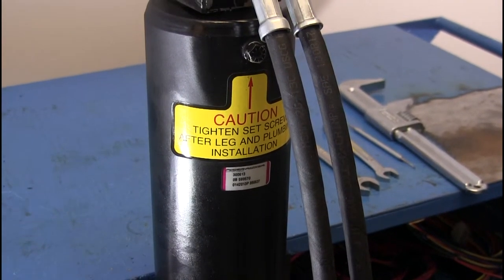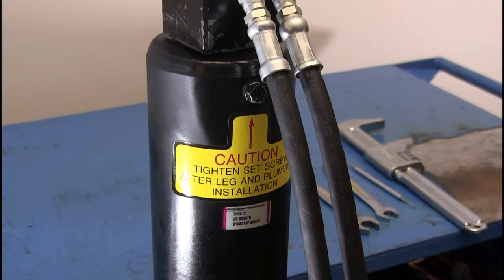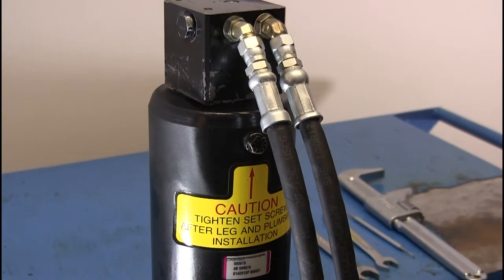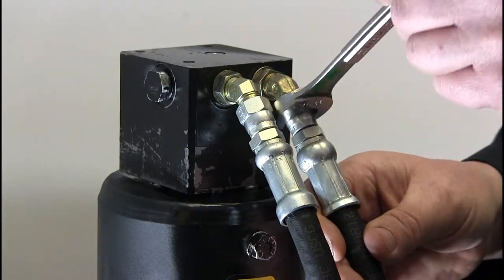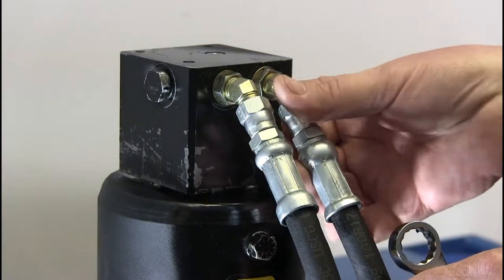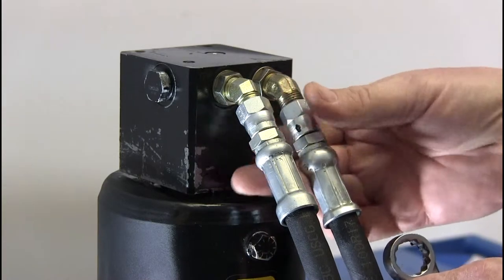The first thing we want to do is extend the jack leg two to three inches to help alleviate the pressure inside the jack leg. We want to remove the hose using the 11/16 combination wrench. There should be very little pressure on these hoses at this time.